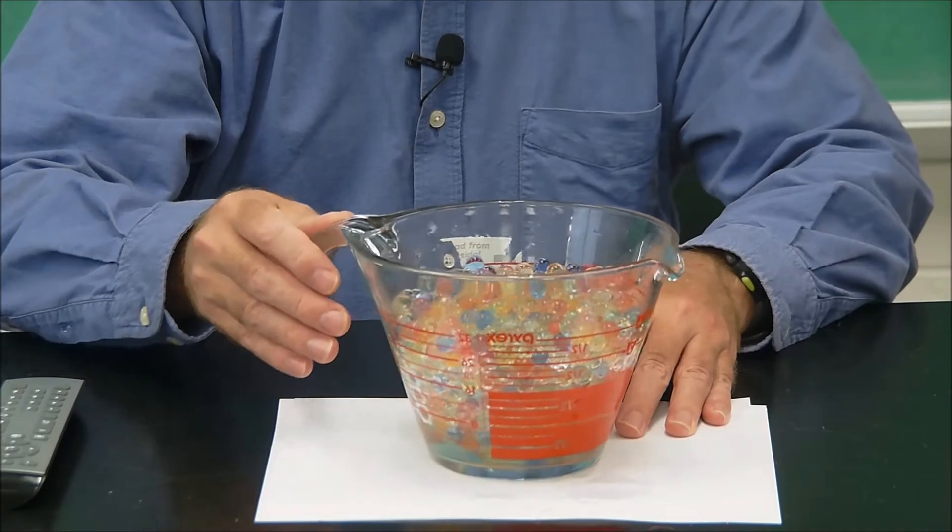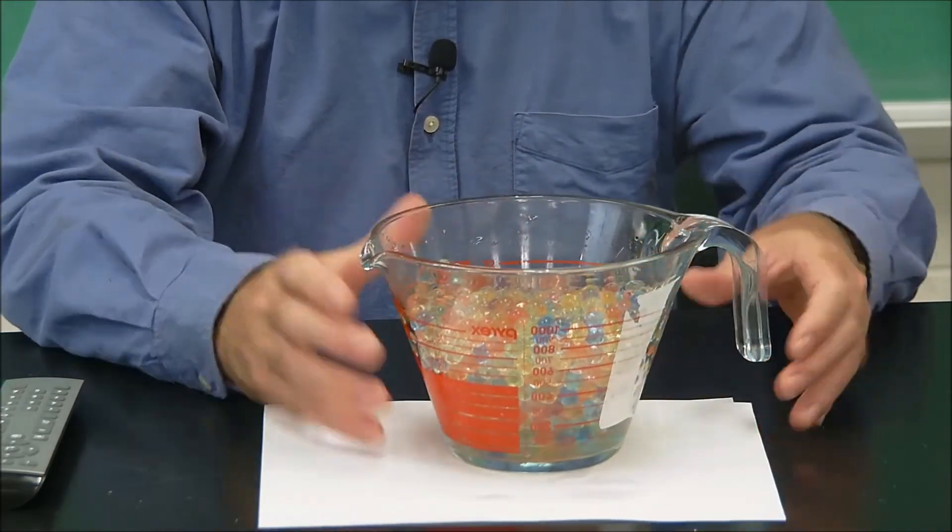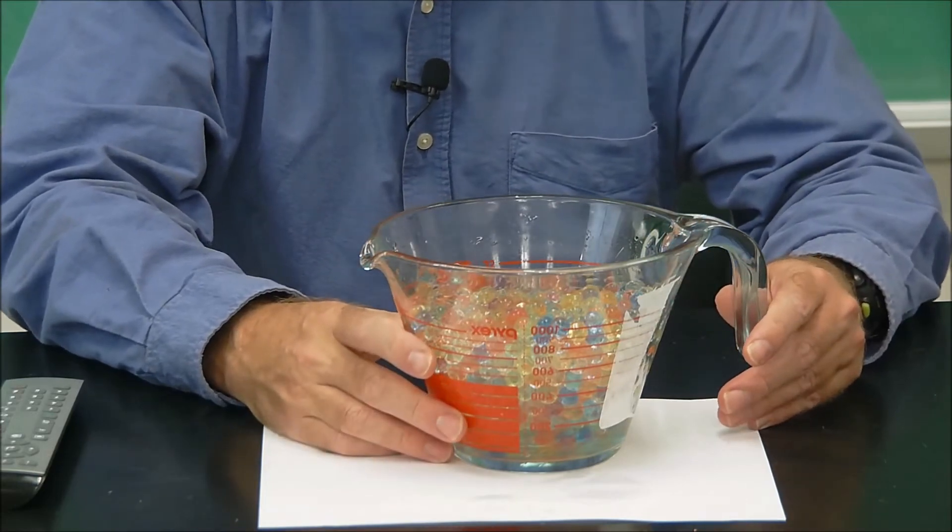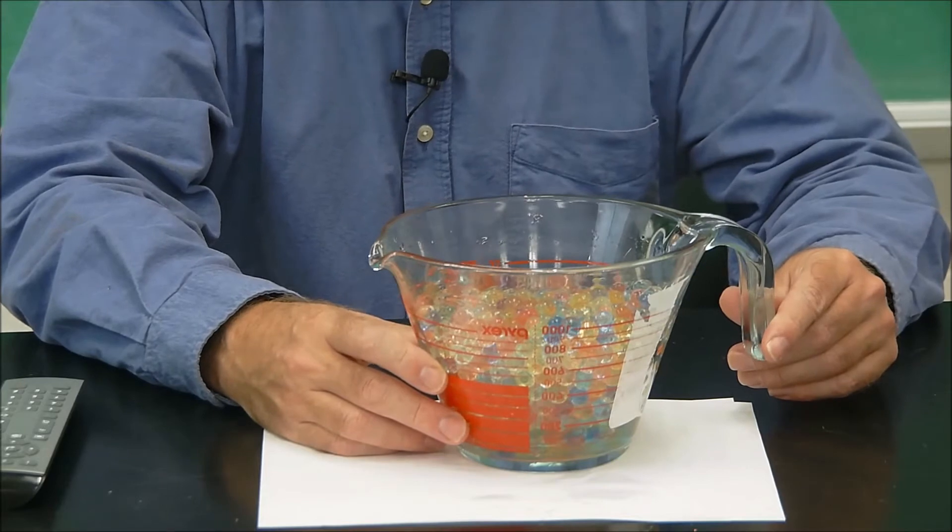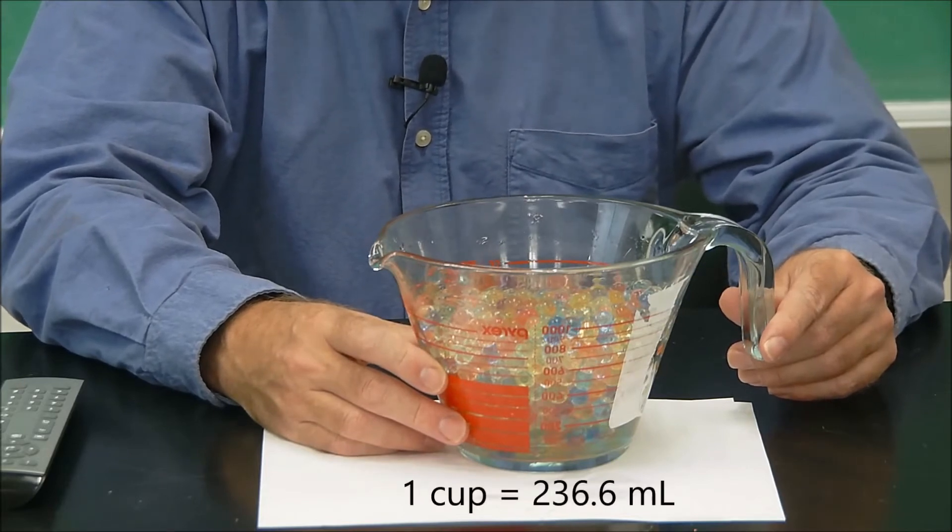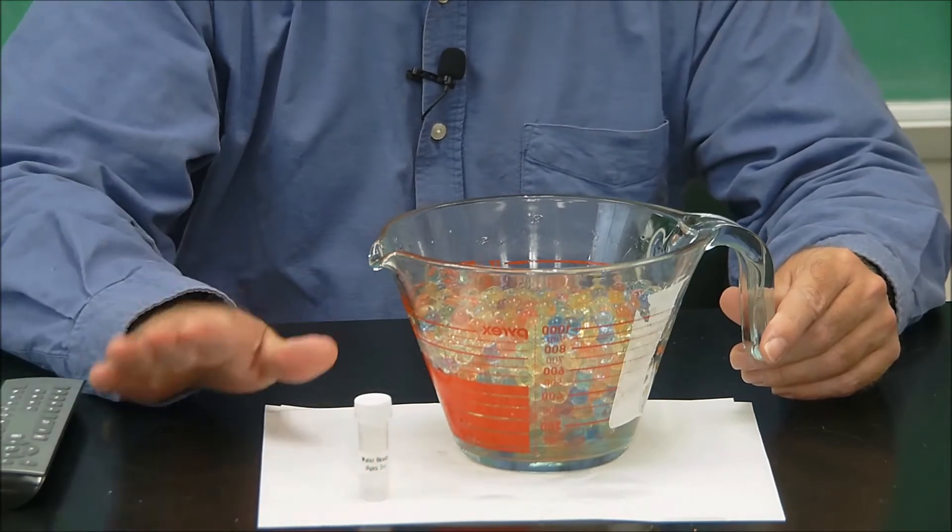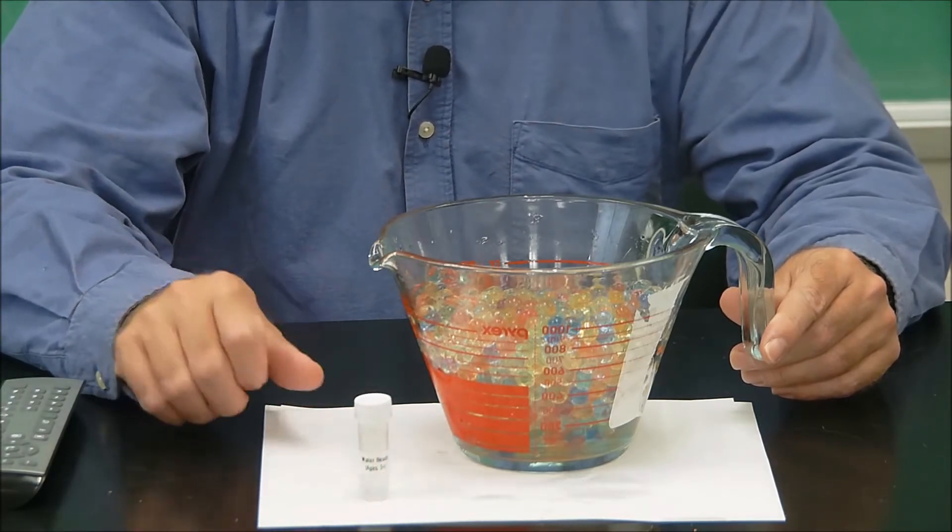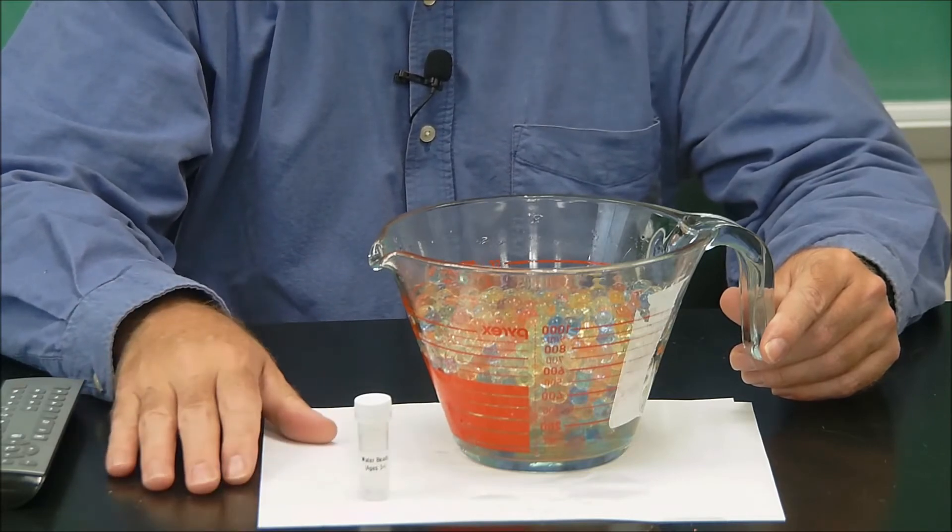Okay, so here we have our measuring cup, and this measuring cup is fortunate to measure both in cups as well as milliliters. But if your measuring cup doesn't do that, we can do a simple conversion. So each cup is about 237 milliliters. Now remember that we started with a container of water beads that was about a half a tablespoon. That's around seven or eight milliliters. So there's 15 milliliters in a tablespoon.